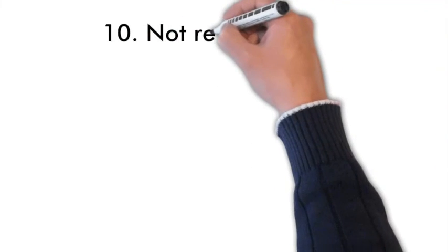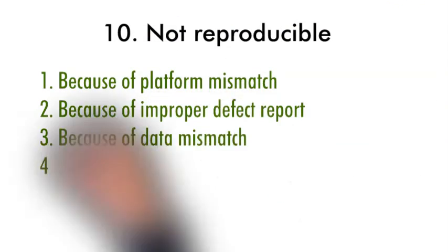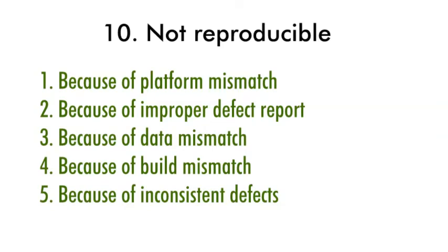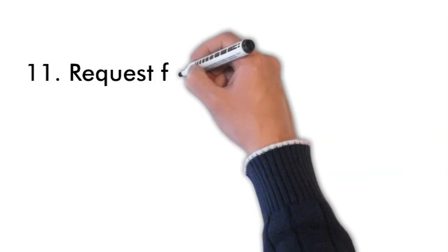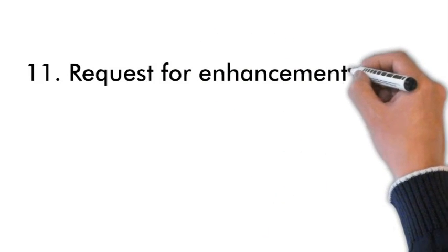The next stage is not reproducible bug. Because of platform mismatch, improper defect report, data mismatch, build mismatch, or some inconsistent defects, if the developer is not able to reproduce the bug, they may reject it by saying it is not reproducible. The final stage is request for enhancement, or RFE. If the test engineer finds a defect but the developer says it's not a requirement, they may raise it as an RFE and reject the defect on that basis.